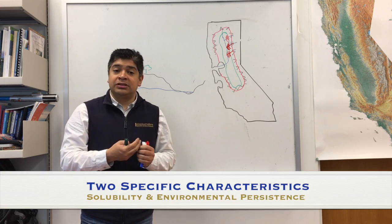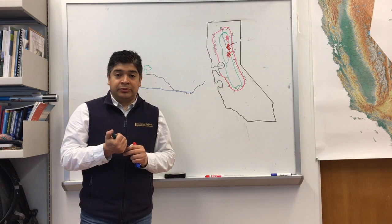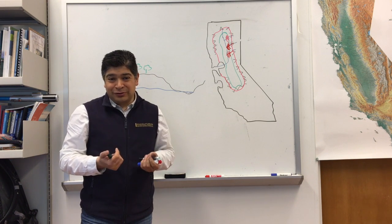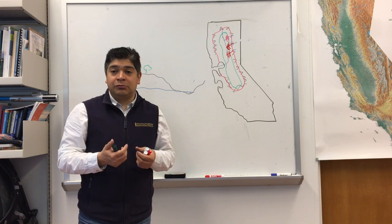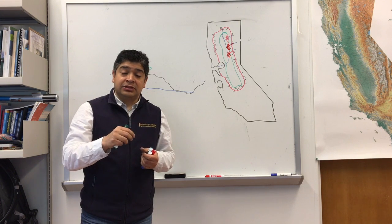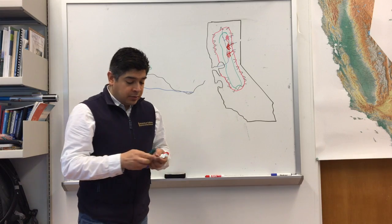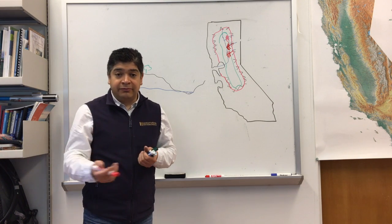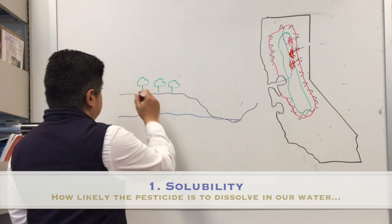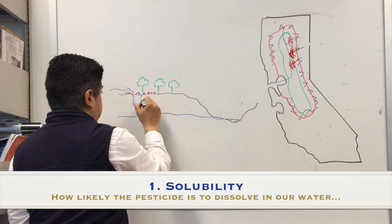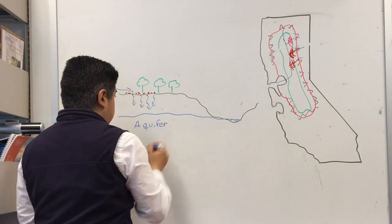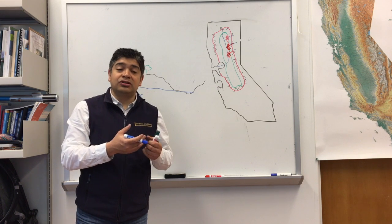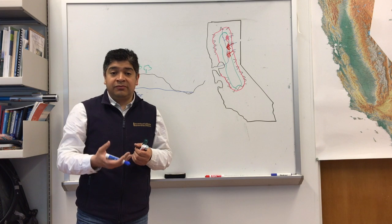Let's talk about two specific characteristics of pesticides: solubility and persistence in the environment. Solubility is basically how likely the pesticide is to dissolve, to get mixed with water. As the pesticide mixes well with water, that specific pesticide will travel where the water is traveling. As we are applying pesticides in our backyard or in our fields, if this pesticide is soluble, the pesticide will travel with the water. If the roots of the plants do not take that water from the irrigation, it will continue infiltrating until it reaches the aquifer.